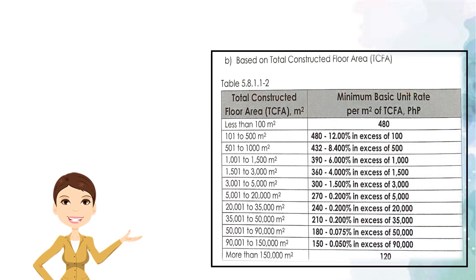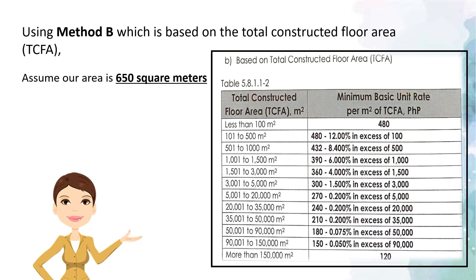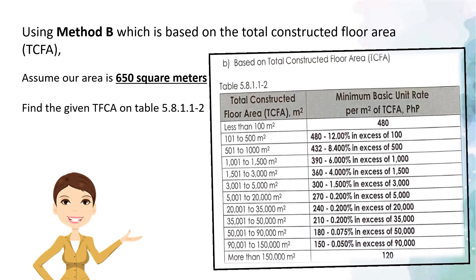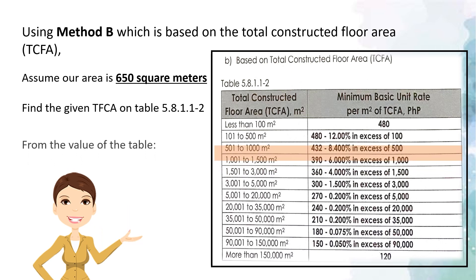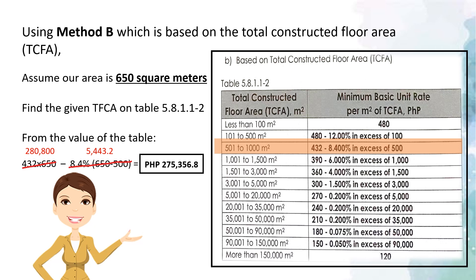To illustrate solving using Method B, here is an example. Let us assume that the area is 650 square meters. Find the given TFCA on the table on the right part of the screen. From the value at the table, use the formula and calculate. The result is a fee of 275,356.8 pesos.